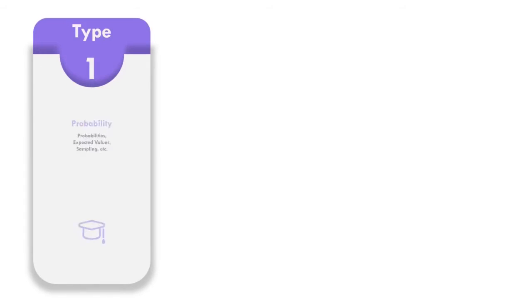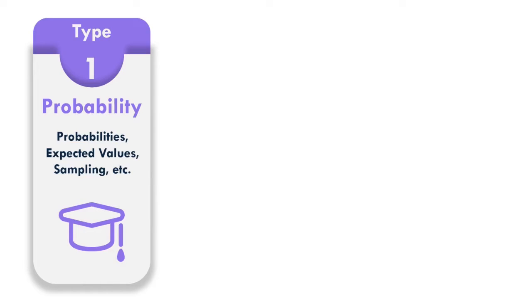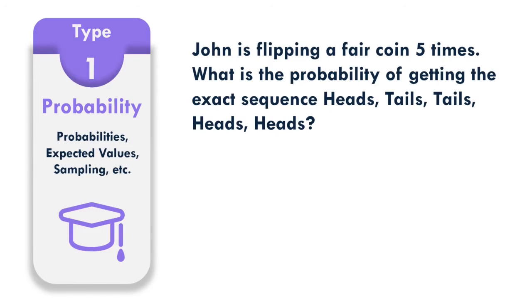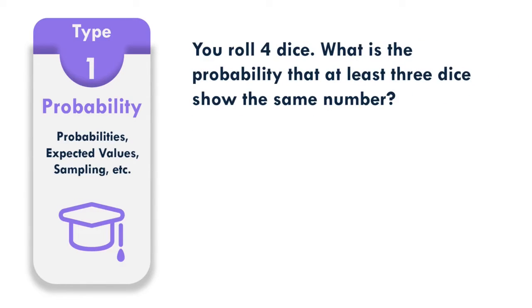You can find all the answers and explanations to these questions in my full SIG Quantitative Evaluation Guide — the link is in the description. Probability questions usually deal with calculating probabilities, expected values, and number of possible samples for various scenarios. These questions will greatly vary in their level of difficulty, from very simple to quite challenging.